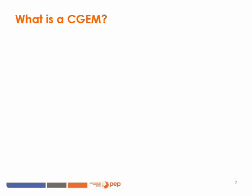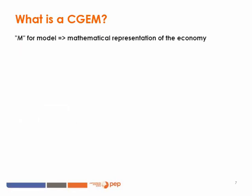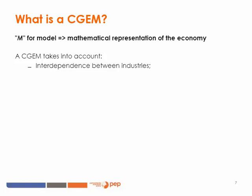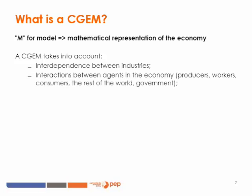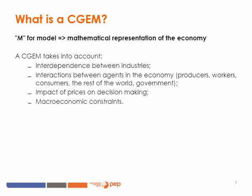So, more precisely, what is a CGE model? M stands for model, as in the case of any economic model. A CGE model is a mathematical representation of the economy. In a CGE model, we take into account the interdependence between the industries as well as the interaction between the agents in the economy — and by agent, we mean producers, workers, consumers, the rest of the world, and the government. In a CGE model, the impact of prices on decision-making is crucial and the economy operates under the usual macroeconomic constraints.